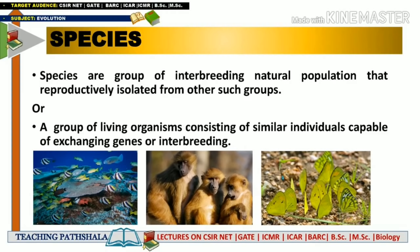If there is reproductive isolation between members of the same group, we will regard them as a different group — that means they are now different species. There should be an absence of reproductive isolation when there is only one type of species. Whenever reproductive isolation is generated, we say the single species has diverged to form two different species. Reproductive isolation will always lead to the formation of a new kind of species, and it is totally absent between members of the same species group.